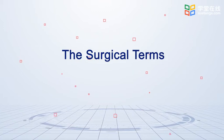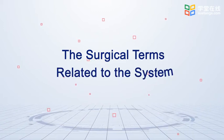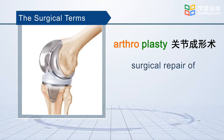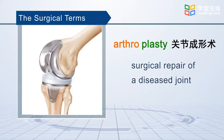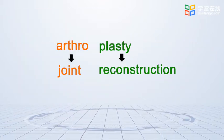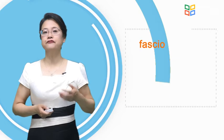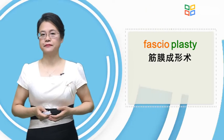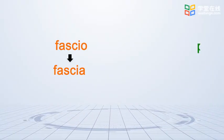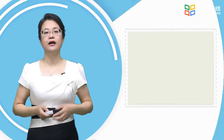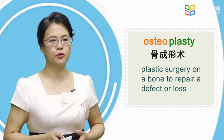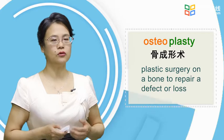Now let's move to the surgical terms related to this system. Arthroplasty means the surgical repair of a diseased joint. Fissureplasty means the surgical repair of a fissure. Osteoplasty means plastic surgery on the bone to repair a defect or loss.